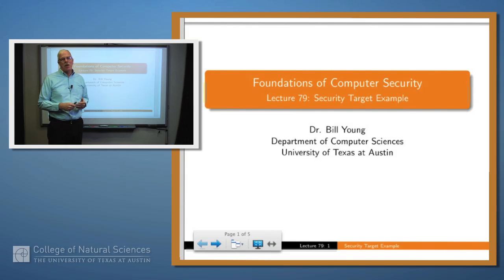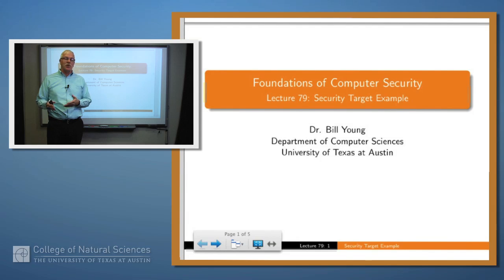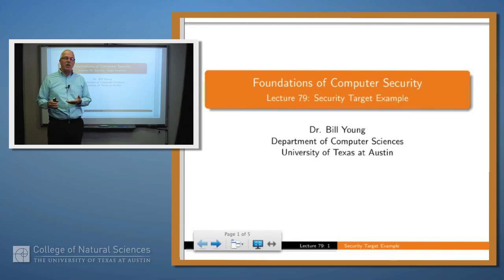Hello again. We've been talking about the Common Criteria — a set of criteria for evaluating security products and protection profiles. We said last time that we could evaluate a protection profile, but we can also evaluate particular products, and these are called security targets.